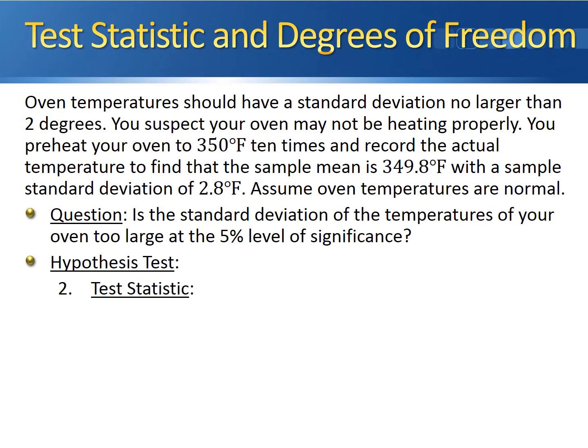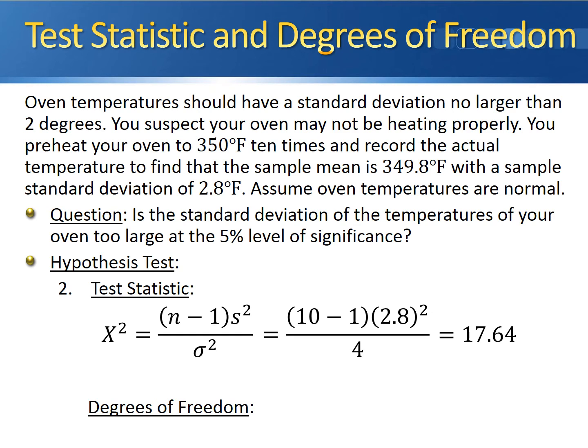At this point, we calculate the test statistic. The test statistic for this test follows a chi-squared distribution, denoted by χ². We calculate it by taking the sample size minus 1, multiplying by the sample variance, and dividing by the hypothesized population variance. This gives us (10-1) times 2.8². Keep in mind the sample standard deviation was 2.8, so the sample variance is 2.8², divided by 4. Working this out gives us a test statistic of 17.64. We can also calculate the degrees of freedom: df = n-1 = 10-1 = 9 degrees of freedom.